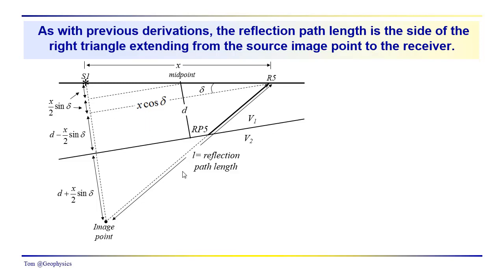This relationship is fairly straightforward to derive, and there would be different ways to go about it. We do have this right triangle. We've got this side over here, which is d minus x over 2 sine of delta, plus d plus x over 2 sine of delta. This side of the triangle is x cosine of delta.